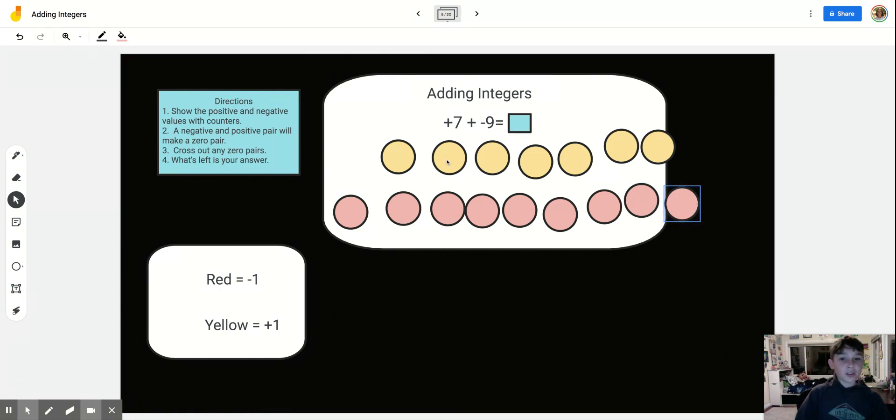Let's just first look at it as zero pairs. One zero pair, 2, 3, 4, 5, 6, 7.